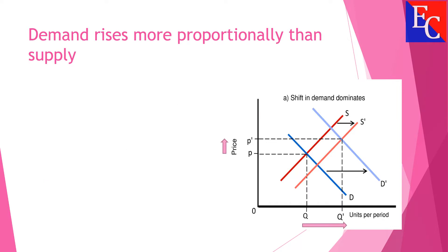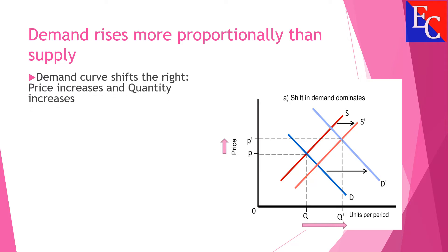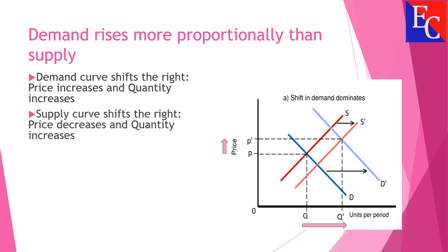Demand rises more proportionally than supply. Due to the rise in demand, the demand curve shifts to the right — price increases and quantity increases. Due to the rise in supply, the supply curve shifts to the right — price decreases and quantity increases.